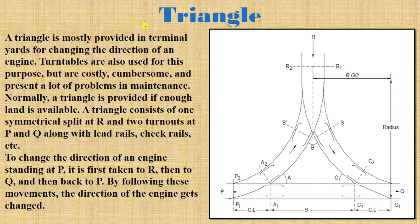The triangle is mostly provided in terminal yards for changing the direction of an engine. Today, turntables are more commonly used for this purpose, though they are costly, cumbersome, and present maintenance problems. Triangles are normally provided only when enough land is available, which is why they are not commonly used.